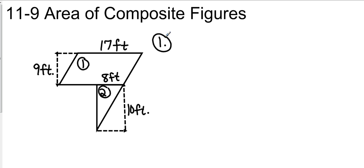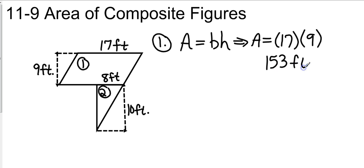Number one is a parallelogram, so my area is equal to my base times my height. My base is going to be 17, so area equals 17 times my height which is going to be 9, and so that gives me 153 square feet. Remember, area is always square feet.